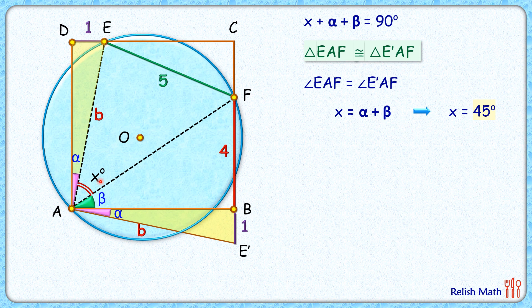So this value x is 45 degrees. Now let's remove this additional figure. If we consider this pink triangle again...